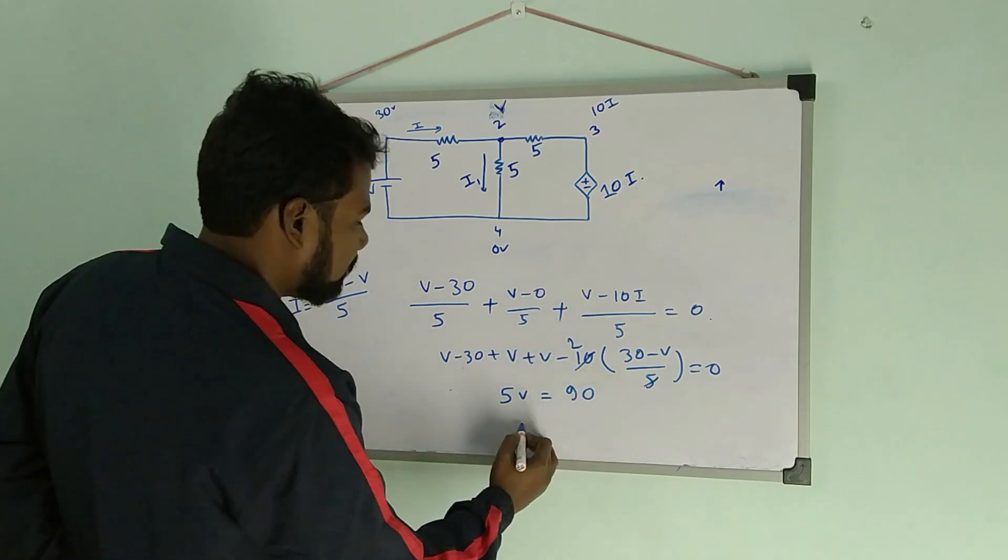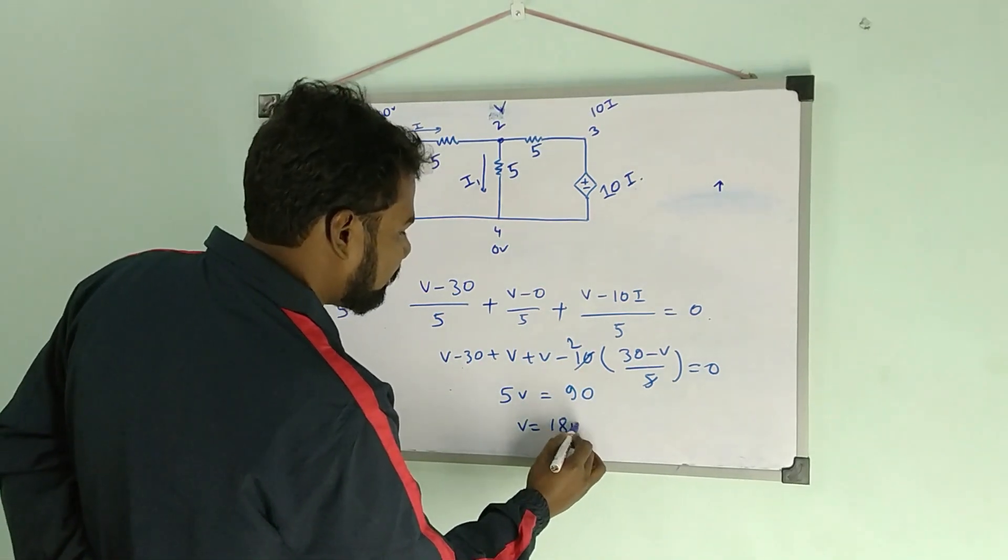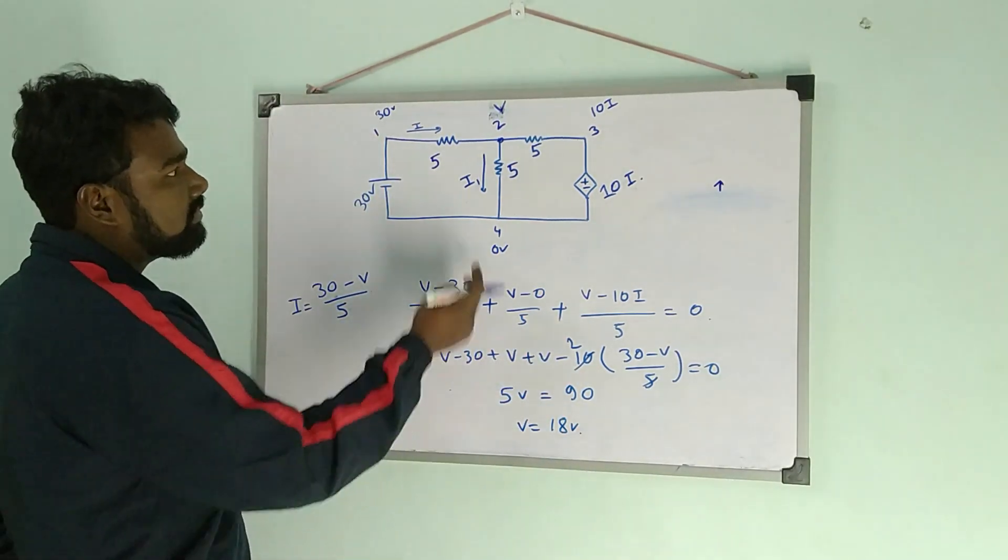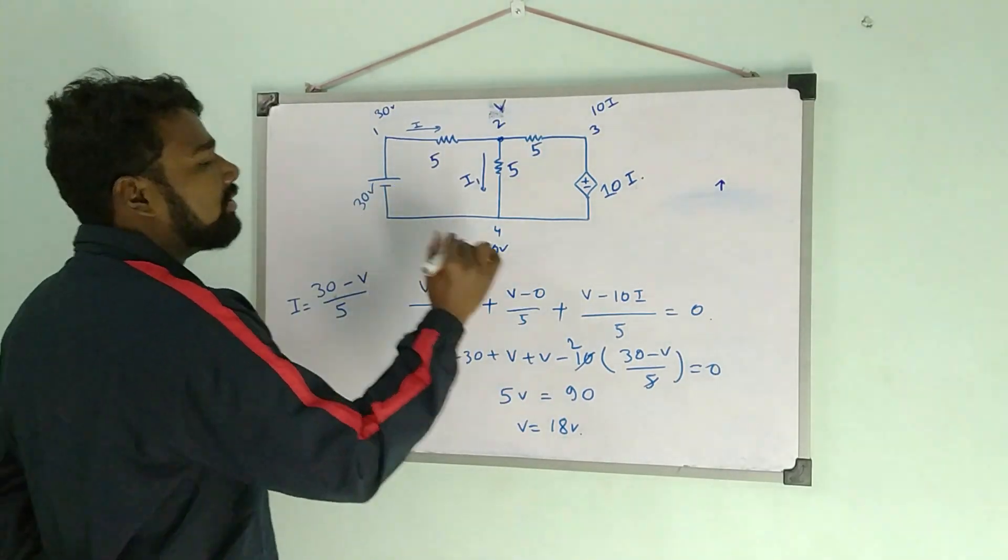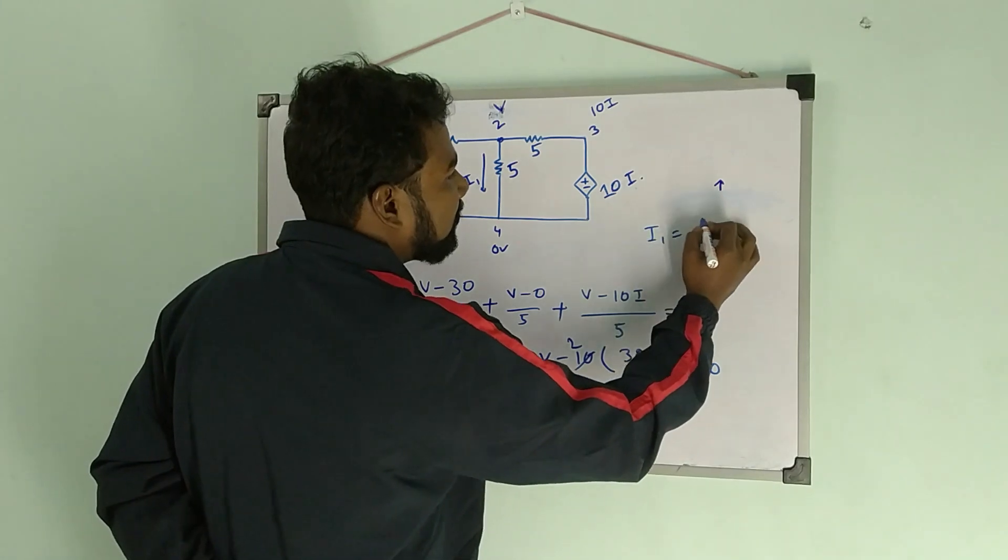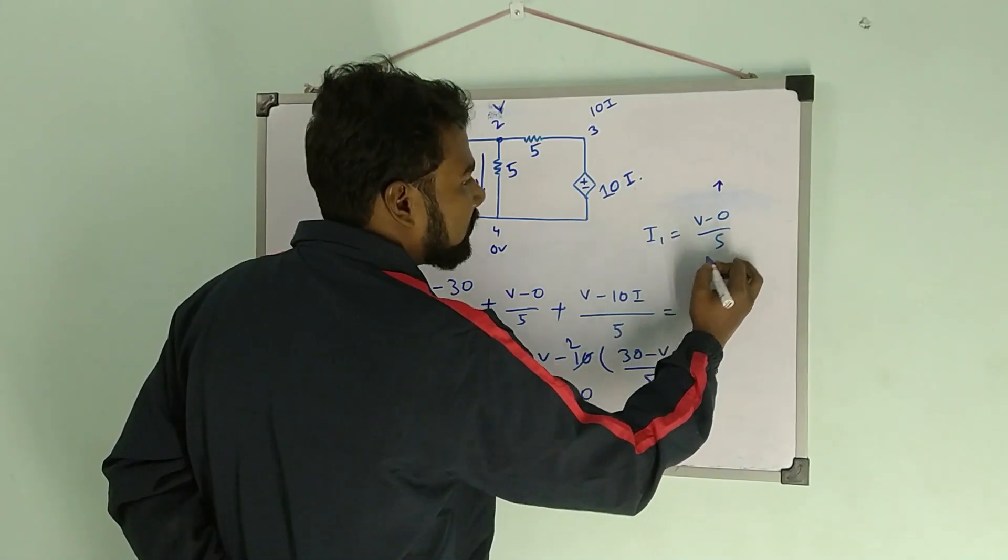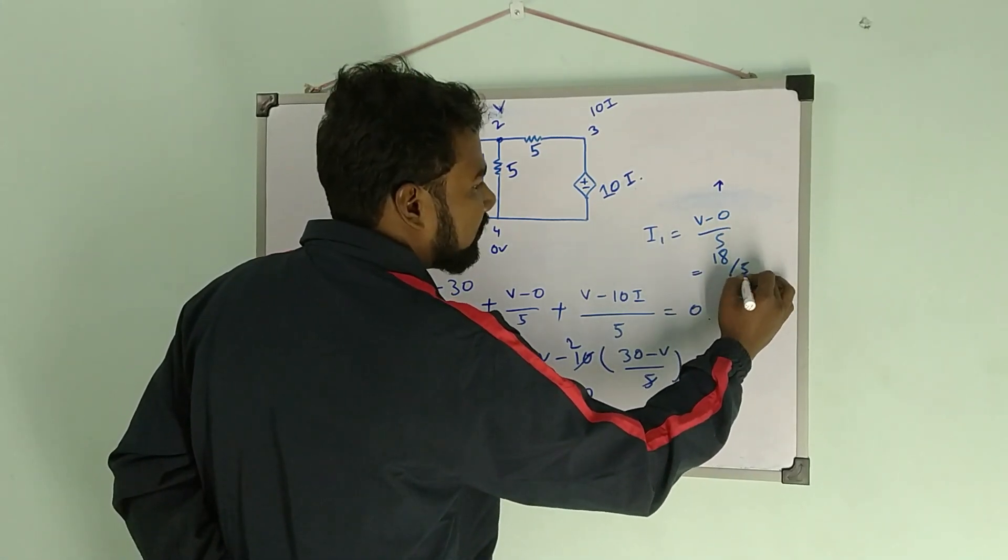So we have 5v is equal to 90, minus 30 is 60, so v is equal to 18 volt. So the value of voltage at node 2 is 18 volt. The value of current i1 is nothing but (v minus 0) by 5, which is equal to 18 by 5.